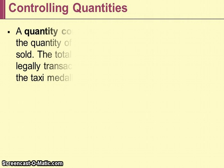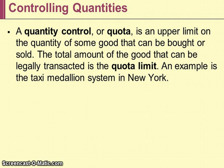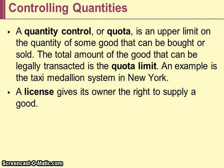In the last part of this lecture we will talk about quantity controls or quotas. A quantity control or quota is an upper limit on the quantity of some good that can be bought or sold. The amount of a good that can be legally transacted is the quota limit. An example is the taxi medallion system in New York. A license gives its owner the right to supply a good, so a license is another type of quota or quantity control that the government can institute by limiting how many people are allowed to supply something.